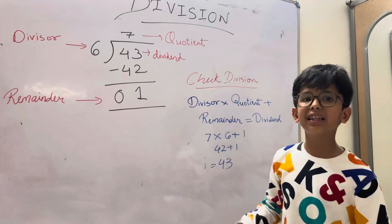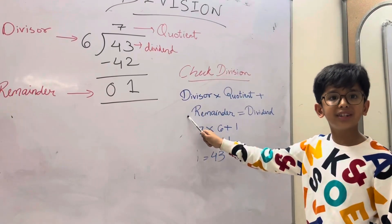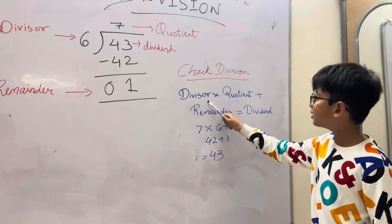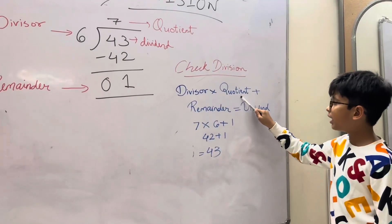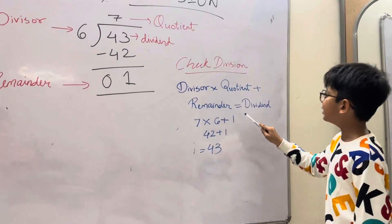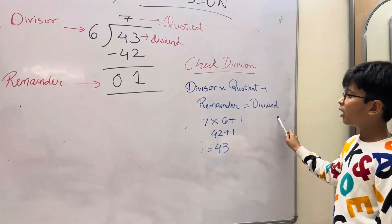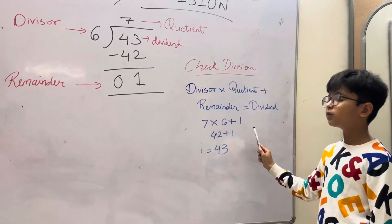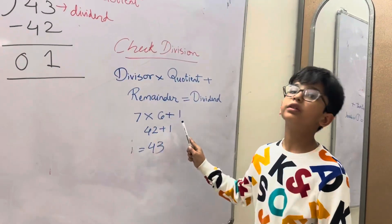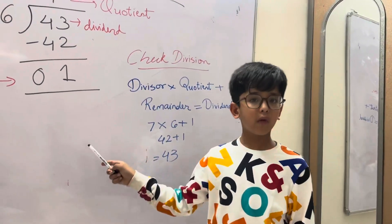Now we check the answer. The formula for checking is divisor multiplied by quotient plus remainder is equal to dividend. Now 7 multiplied by 6 plus 1, 42 plus 1 is equal to 43.